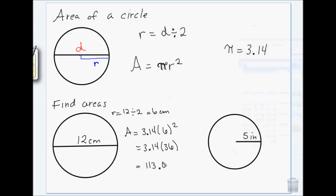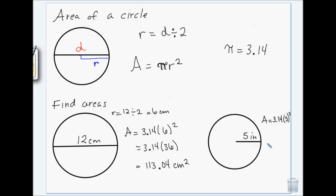That's 113.04 centimeters squared. Even though it's a circle, we still have square units — these are literally tiny little squares of centimeters filling up the whole circle. For the next one we already have the radius, so it's 3.14 times 25.